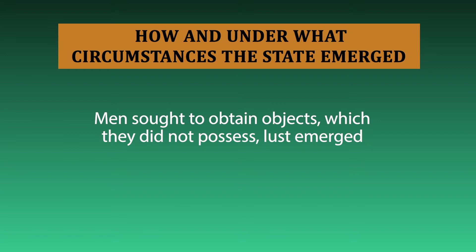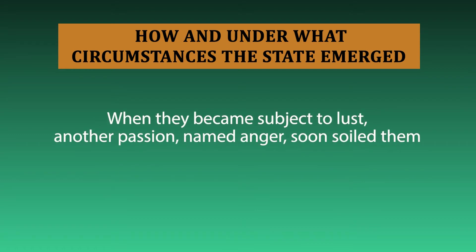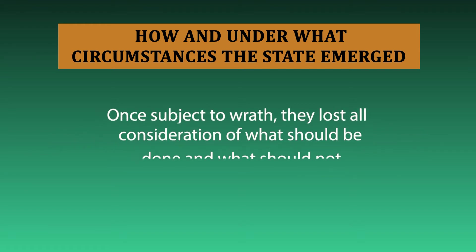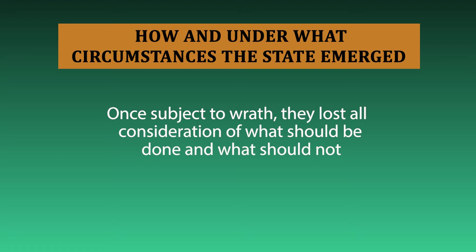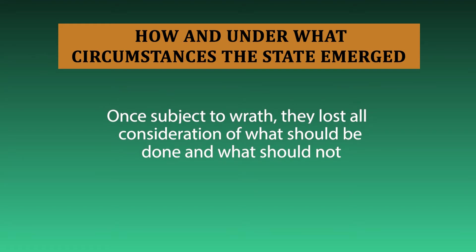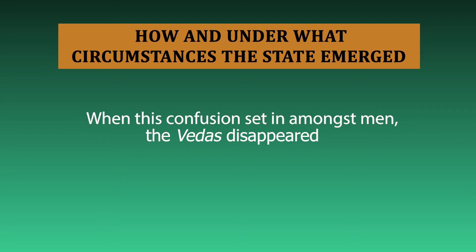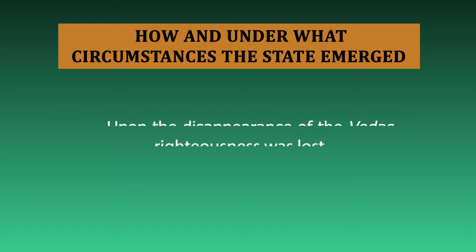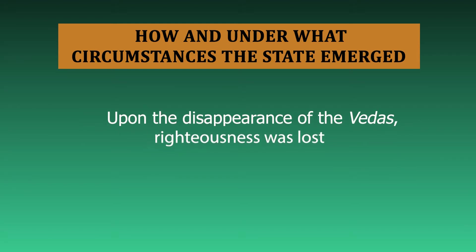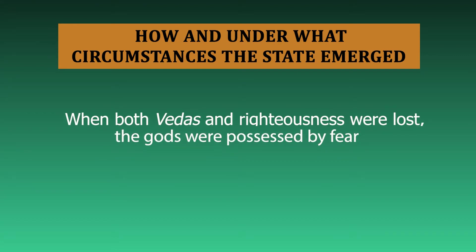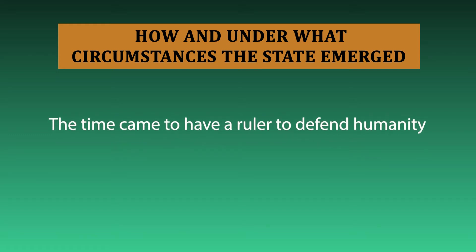Men sought to attain objects they did not possess. This led to lust, passion, anger and greed, and soon it led to a state of disorder, anarchy and infighting. Trust disappeared, and when there was confusion and lack of trust, the Vedas disappeared. With the disappearance of the Vedas, righteousness was lost. When both righteousness and Vedas were lost, gods were possessed with fear, and the time came to establish a ruler over humanity.